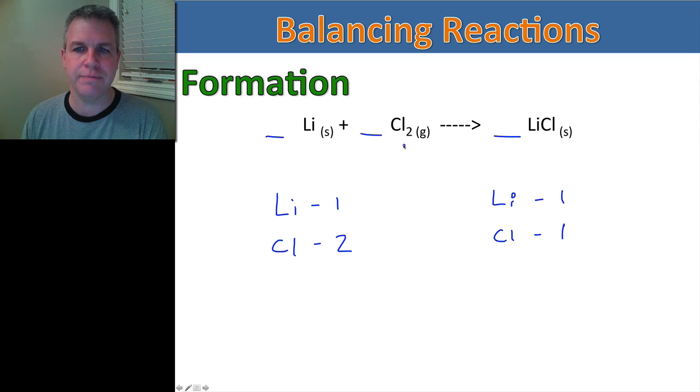Chlorine, I have two here. And on this side, I only have one. The only way that I can make that two is to write a coefficient in front. Remember, I can't write a subscript over on the other side because that will make this unbalanced. So now I have two chlorines on this side, but now that's giving me two lithiums on this side.